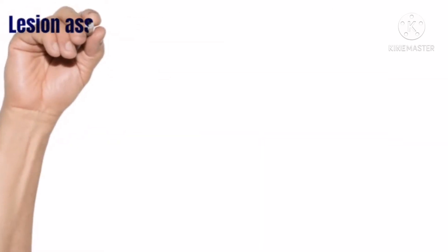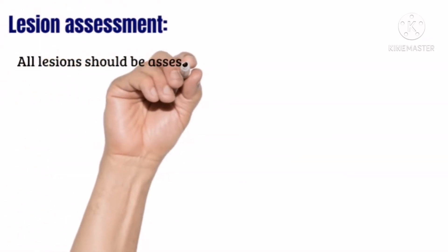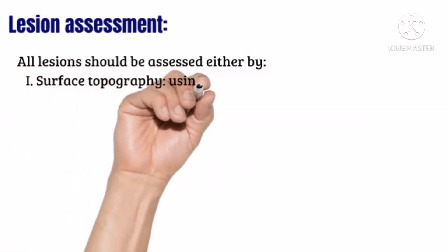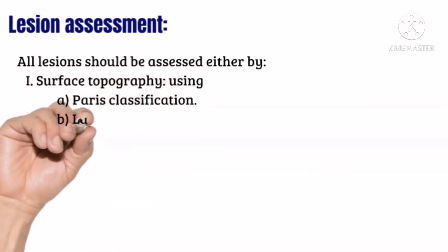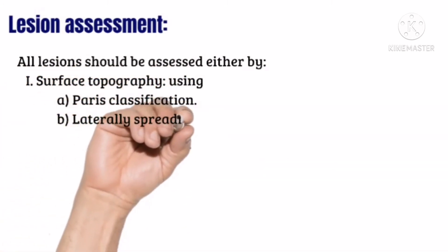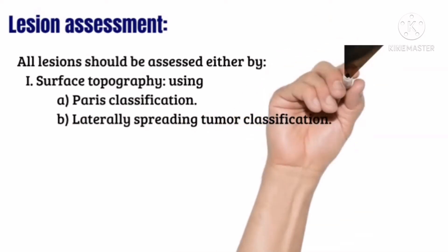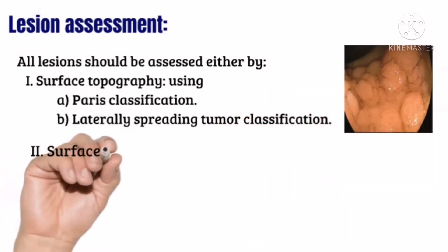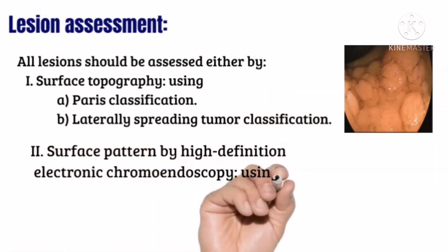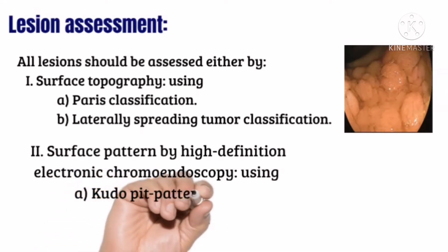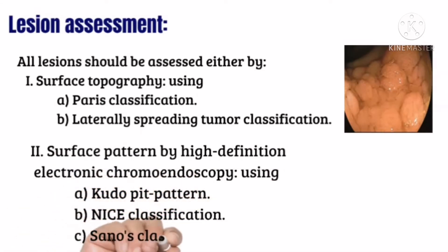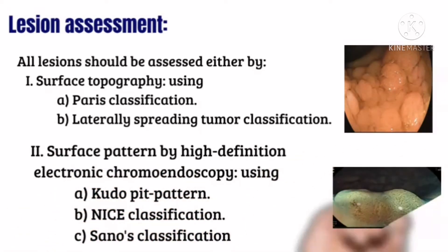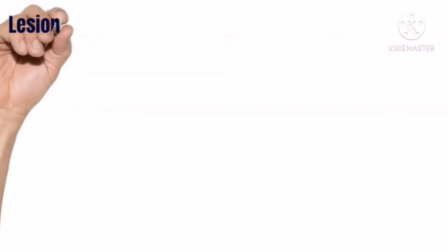Colonic lesions are assessed either by surface topography using barris classification or lateral spreading tumor classification, and also by surface pattern by high definition electronic chromoendoscopy using kudu bit pattern, nice classification, or sinus classification.